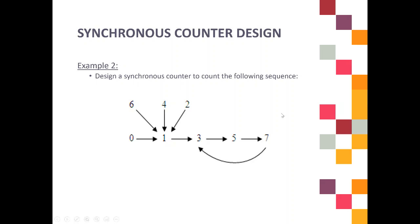Now we look at example two. Design a synchronous counter to count the following sequence. Based on this example, it already gives you the transition state diagram, so you just proceed to the next step. In designing a synchronous counter circuit, you have three main steps. The first step, you need to derive your excitation table. Second, you need to simplify the J and K by using K-map. And the last step, you need to draw your counter circuit.